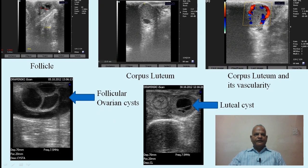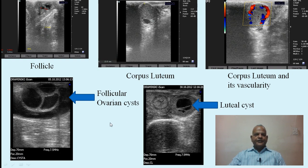Here are pictures of the follicle — it is anechoic because it is fluid-filled and absorbs all incident sound. One can visualize the corpus luteum and measure its dimensions. This image shows the corpus luteum and its vascularity — red showing the arterial and blue showing the venous supply, evaluated by color Doppler. Follicular and luteal ovarian cysts are also shown: follicular cysts and luteal cysts which are partially luteinized.